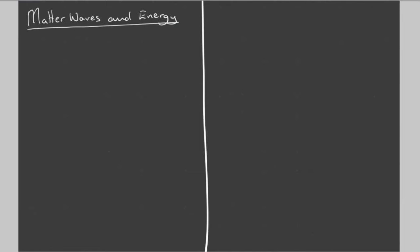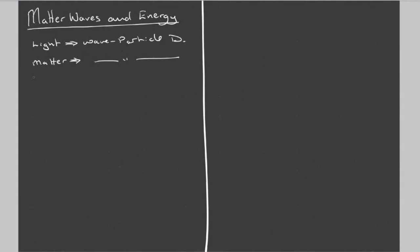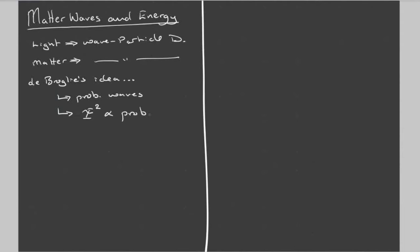Let's do a quick review of previous sessions content. We had the idea of light showing wave-particle duality. We also learned that matter — things with mass — also shows wave-particle duality. We went on from that to discuss de Broglie's idea that the waves were probability waves, and they had the property that if you square the shape of the wave it generates the probability function. The technical term we use is the wave function.